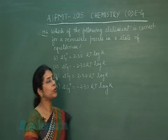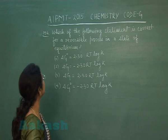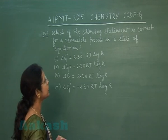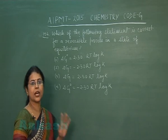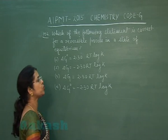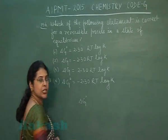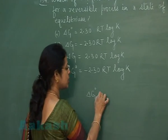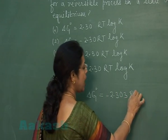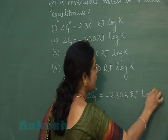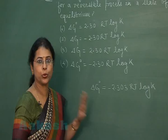Next question, number 154: Which of the following statements is correct for a reversible process in a state of equilibrium? When any process is at equilibrium state, the relationship that applies is: ΔG° = −2.303 RT log K. So the correct option must contain this relationship.